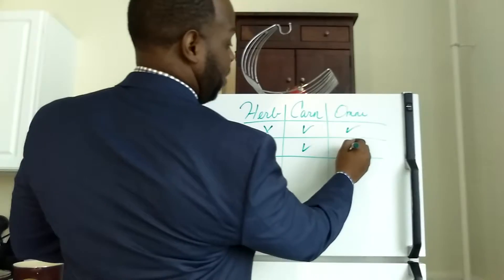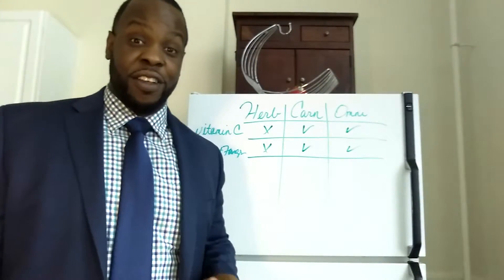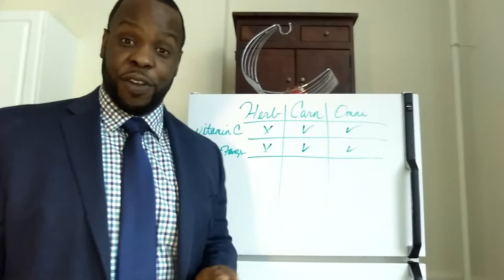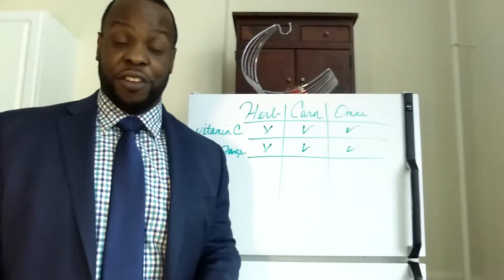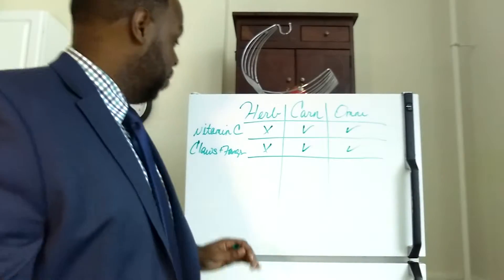Do herbivores have claws and fangs? No. Carnivores? Yes. Omnivores? Yes. Bears, raccoons, they have claws and fangs so they can still eat animal flesh, but they can also eat a herbivorous diet. Moving right along.